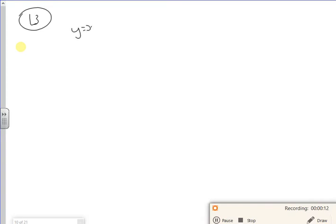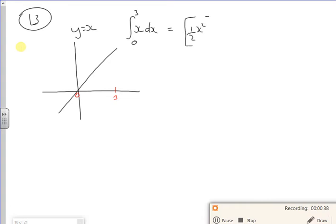So imagine you've got the line y equals x and you want to find the integral of x between 0 and 3. So I've got a line, I'm looking between x is 0 and x is 3. If I integrate it, I get a half of x squared between 0 and 3. If I put the 3 in and then put the 0 in, it gives me a half of 9, so it gives me 4 and a half.